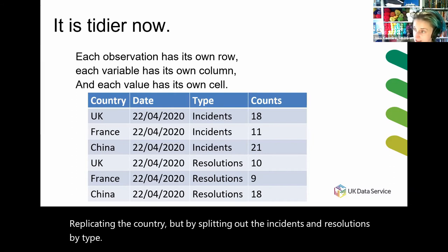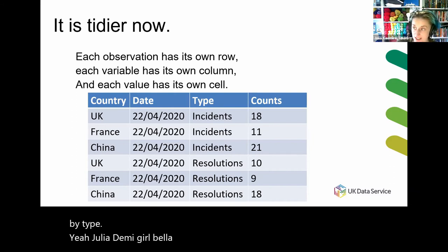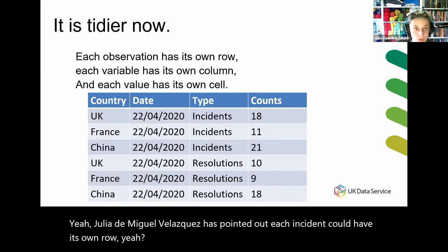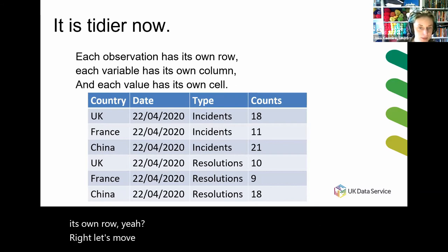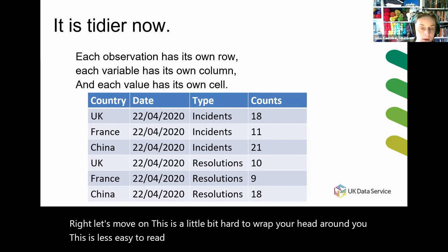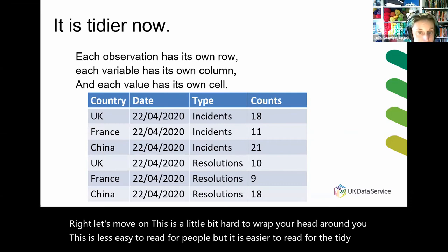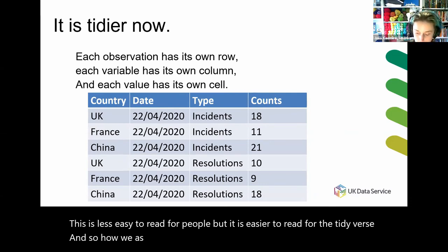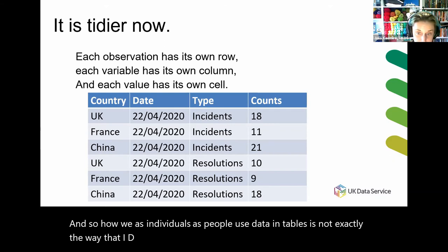Julia de Miguel Velasquez has pointed out each incident could have its own row. Right, so let's move on. This is a little bit hard to wrap your head around — you might feel this is less easy to read for people, but it is easier to read for the Tidyverse. How we as individuals use data in tables is not exactly the way the Tidyverse works best with data, and so that's a little bit of a shift in mindset.